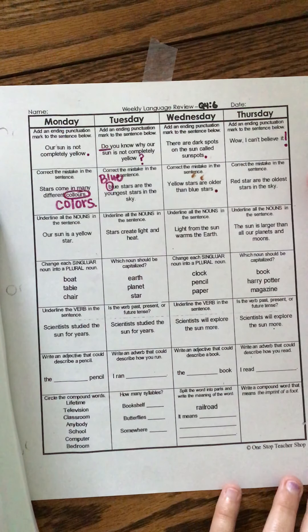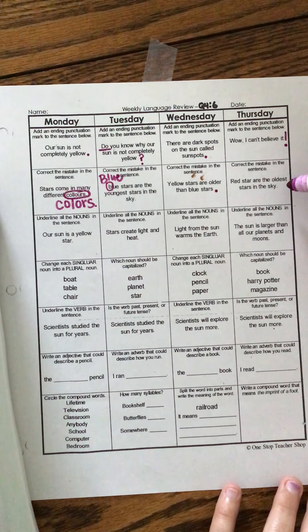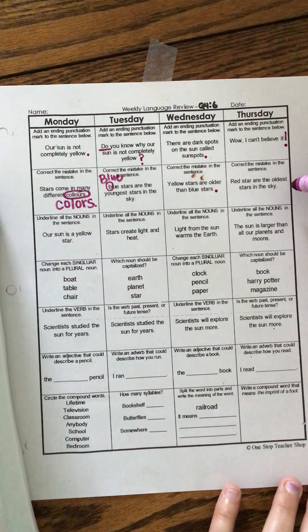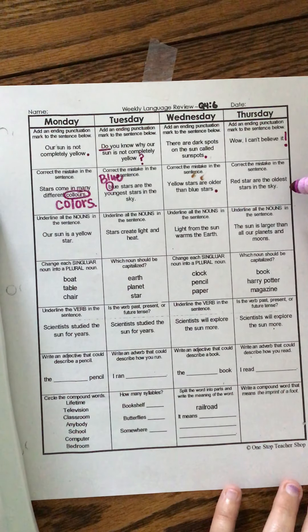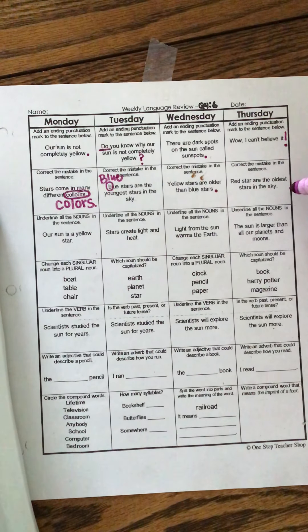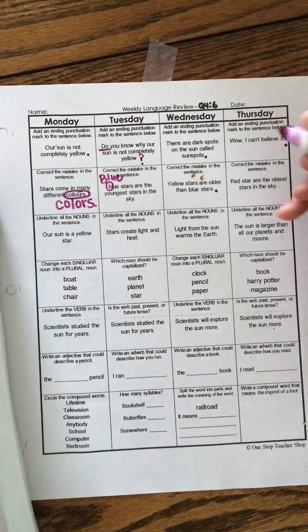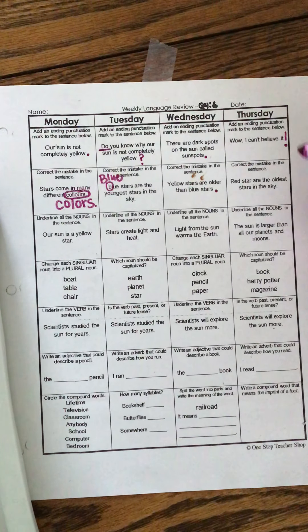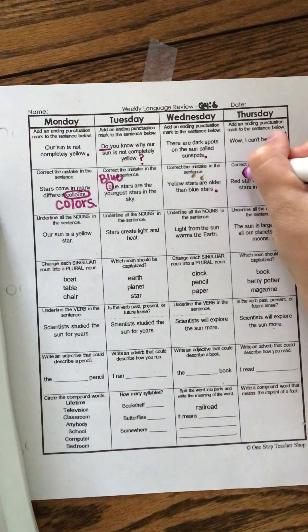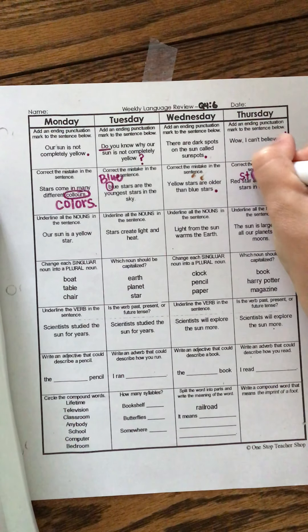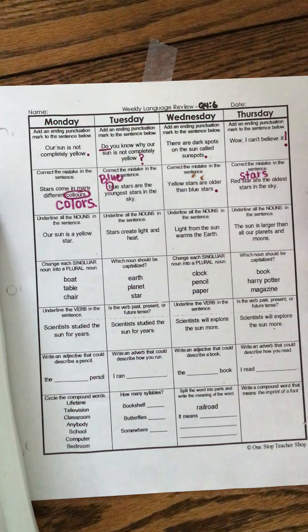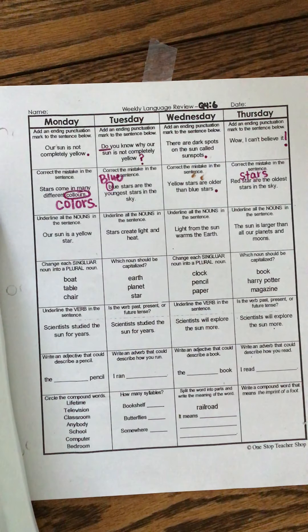Correct the mistake. Red star or the oldest stars in the sky? Hmm. Doesn't sound right. So this is supposed to be a plural noun because it's more than one star. So red stars are the oldest stars in the sky. Good.